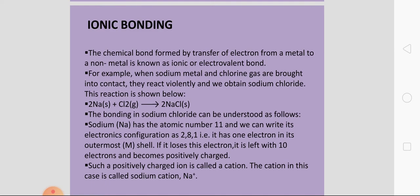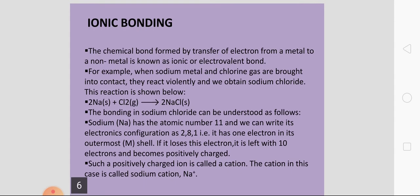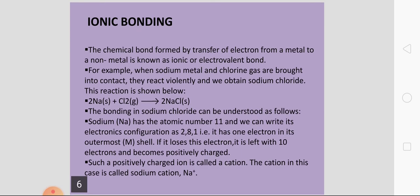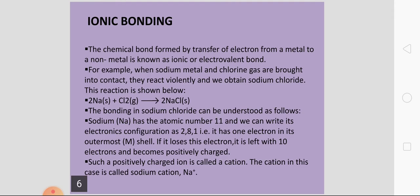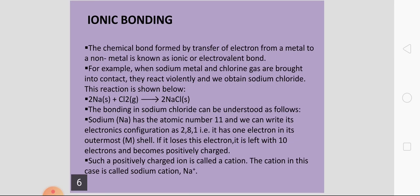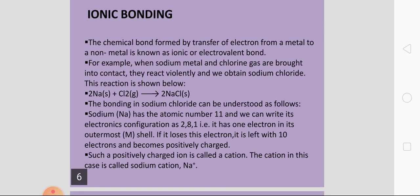Ionic bond क्या होता है? The chemical bond formed by the transfer of an electron from a metal to a non-metal is known as an ionic or electrovalent bond. Ionic bond का formation होगा metal और non-metal के बीच में, जिसमें ions का formation होगा — cations और anions। Metal की tendency electron lose करने की होती है और electron lose करने के बाद वो cation में convert होती है, जबकि non-metal electron accept करके anion बनती है। इनके बीच attraction force को ही हम ionic bond या electrovalent bond बोलते हैं।